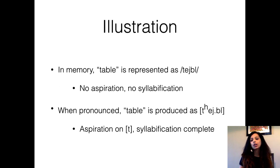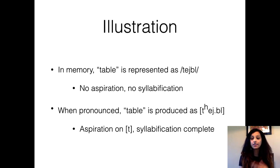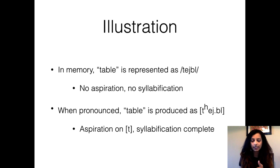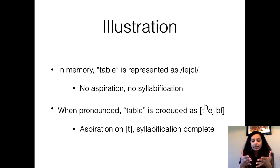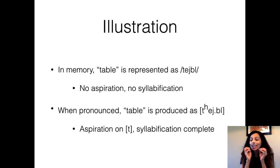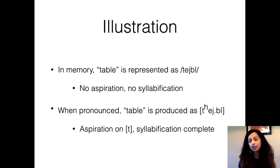As an illustration of what I mean by memory versus pronunciation: if you look at the word 'table' in English in IPA, it is represented without any syllabification — you don't see any dots, no syllable symbols, and we don't talk about aspiration. But when you actually pronounce this word, you pronounce it as 'table' with a puff of air at the beginning of the first syllable. That puff of air you hear at the beginning — like 'T' in 'table' — that is what we mean by aspiration.